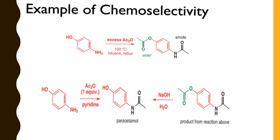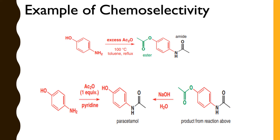To understand chemoselectivity, we consider 4-aminophenol. It consists of two functional groups: NH₂ and OH. In the presence of excess acid anhydride, both functional groups are acylated. But when there is only one equivalent of acetic anhydride, the reagent has to be very choosy — it must choose either OH or NH₂ to form the acylated product. We know that amines are more nucleophilic than alcohols, so acetic anhydride acylates the amine functional group rather than the OH, and we get paracetamol as the product.